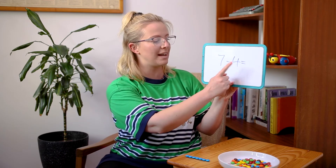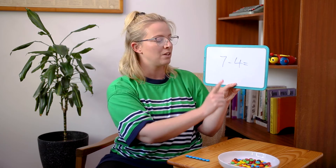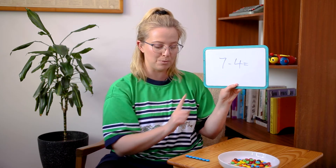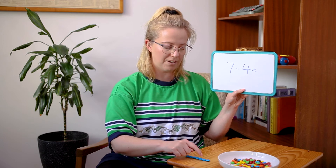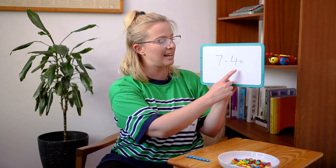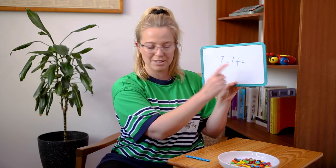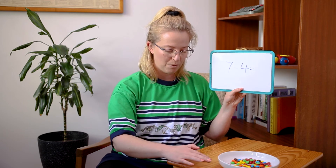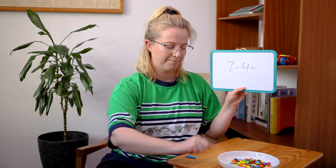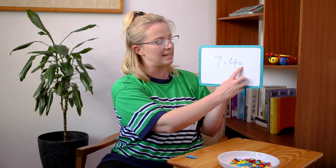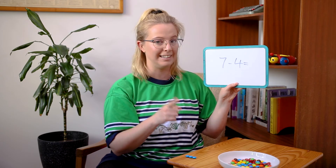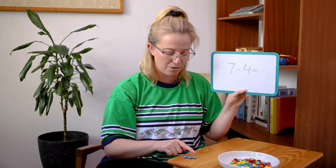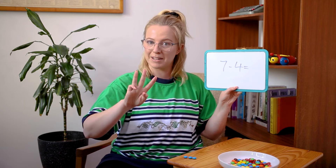This is the last one we're going to do all together and then you'll be able to practice some on your own. We have seven minus four equals. I'm going to start with seven M&Ms — one, two, three, four, five, six, seven. And I need to take away four M&Ms, so let's count four — one, two, three, four — and I'm going to take those four away. What does it equal? Which means how many are left over. Let's count — one, two, three. I have three M&Ms left over. Let's write that down.